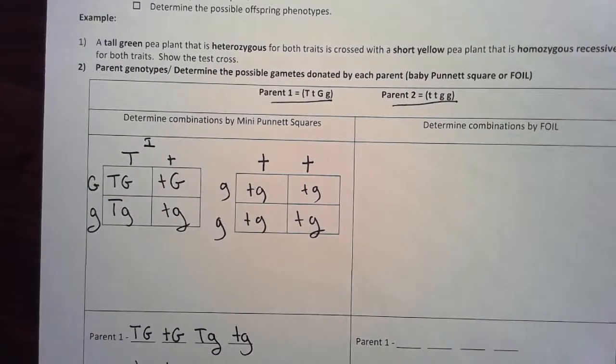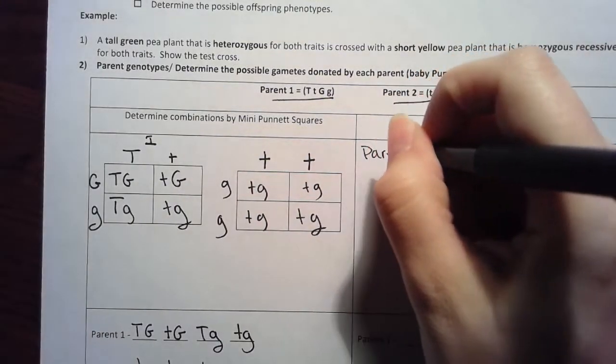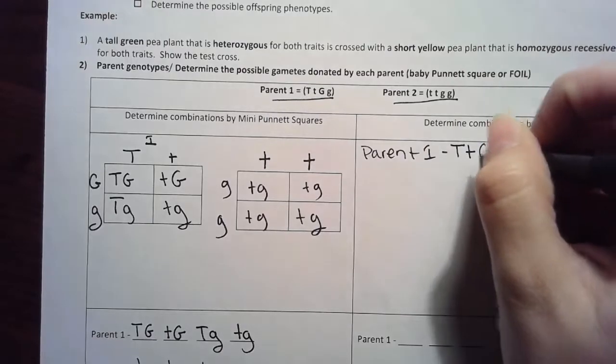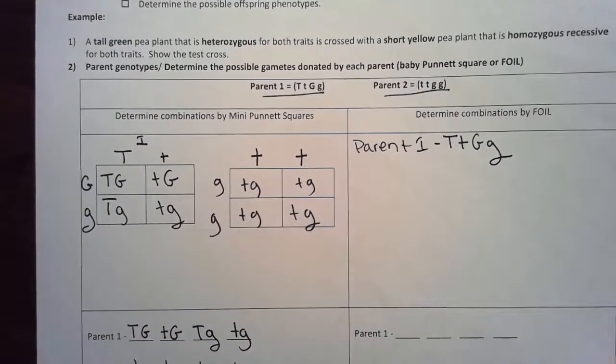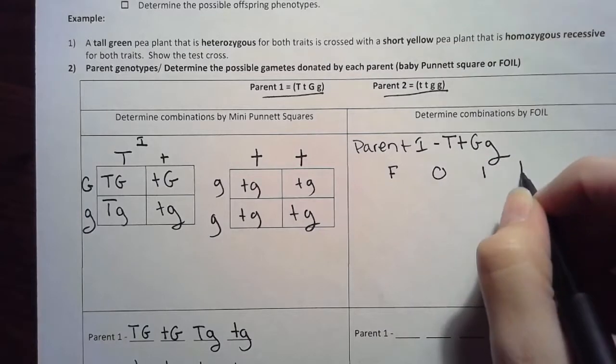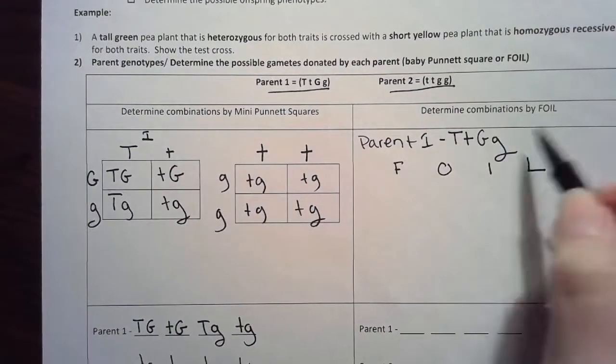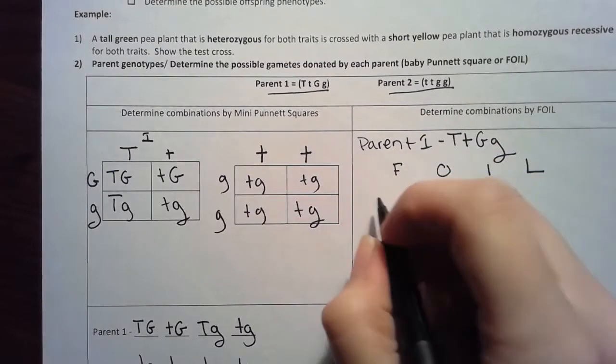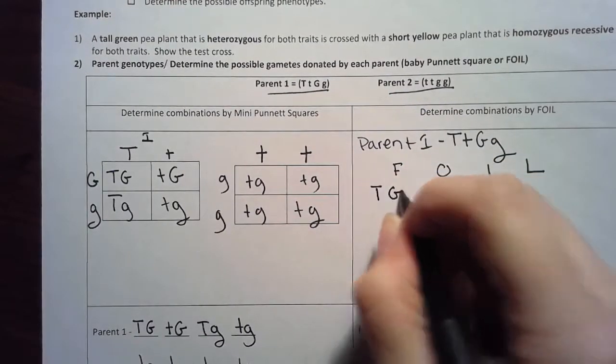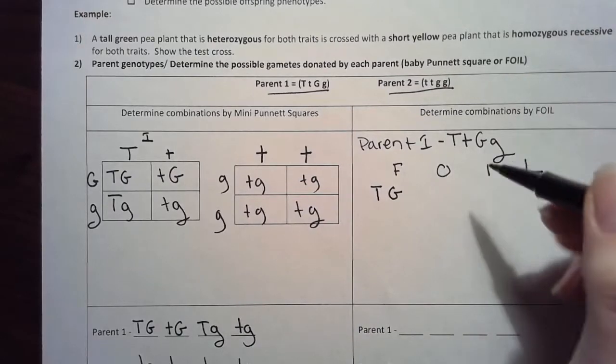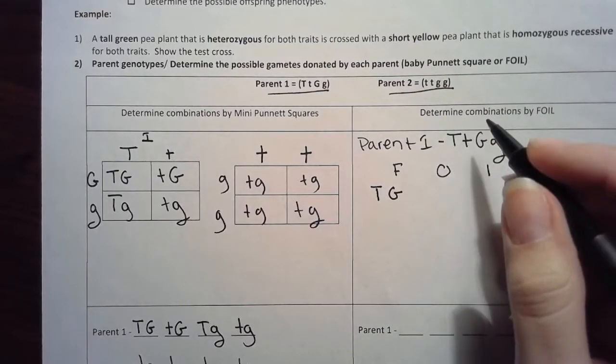If you hate that method, good because I have another one. Parent one is heterozygous, so I'm going to do the FOIL method. If you take algebra you know what I'm talking about. F is for first, so I'm going to take capital T capital G because they're the first of each genotype.